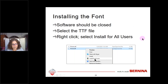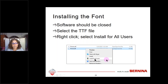After downloading the font, you need to install it — and you need to have the software closed in order to install. Navigate to where you saved the file, left-click to select it, then right-click and select Install for All Users. You need to follow this method in order to get it accurately installed in Corel. Then you can open the software and the font will be listed both as a TrueType font and in Corel.